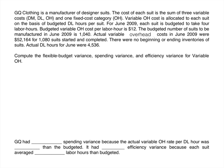Let's look at an example of calculating variable overhead. GQ Clothing is a manufacturer of designer suits. The cost of each suit is the sum of three variable costs — direct materials, direct labor, and overhead — and one fixed cost category, overhead.